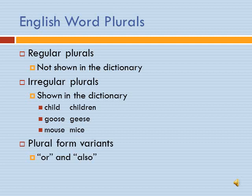Now we'll shift to English words and some rules for making them plural. Regular plurals — just adding S or ES — are not shown in the dictionary. Irregular plurals are shown, such as child/children, geese, mouse/mice. Remember dictionary variants: if an entry shows 'or' between two forms, either can be used. If it shows 'also,' the first is the preferred form.